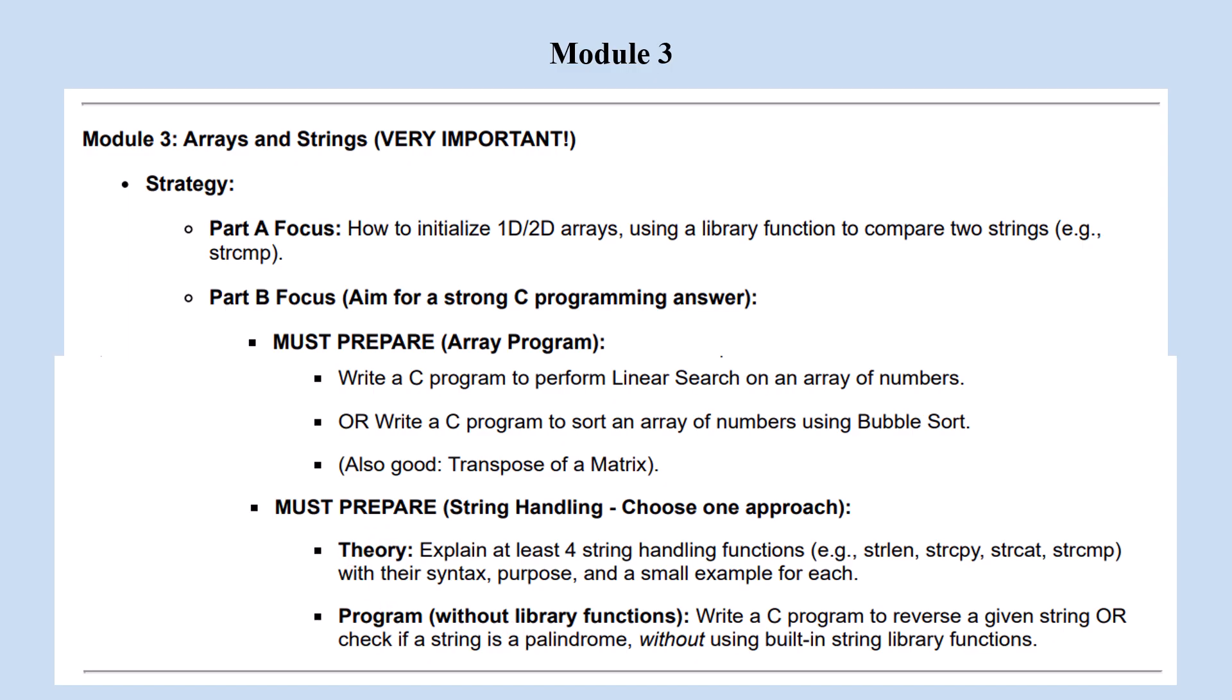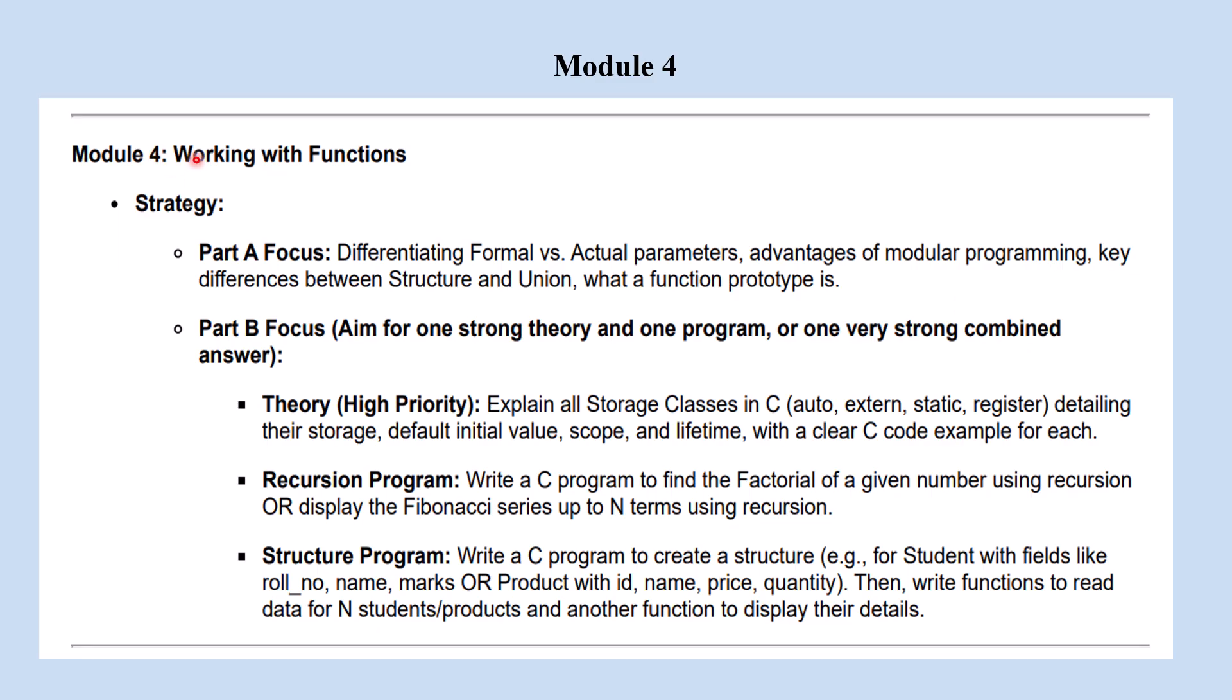After that we can come to module 4. Module 4 is working with functions. Here the strategy: Part A, you can focus on these questions - differentiate formal versus actual parameters, then advantages of modular programming, then the key differences between structure and union. These are important, and what a function prototype is. So these questions you have to compulsorily study for part A from module 4.